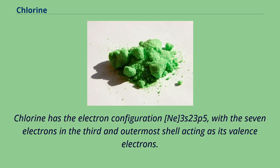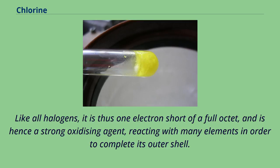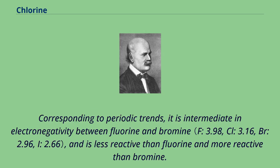Chlorine has the electron configuration Ne3s²3p⁵, with seven electrons in the third and outermost shell acting as its valence electrons. Like all halogens, it is one electron short of a full octet, and is hence a strong oxidizing agent, reacting with many elements in order to complete its outer shell. Corresponding to periodic trends, it is intermediate in electronegativity between fluorine and bromine, and is less reactive than fluorine and more reactive than bromine.